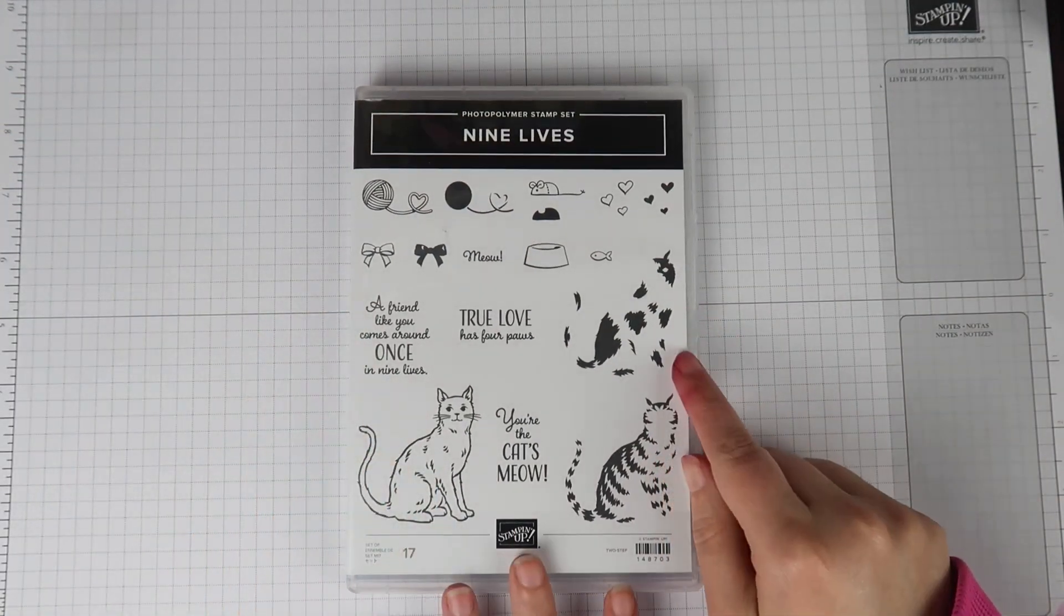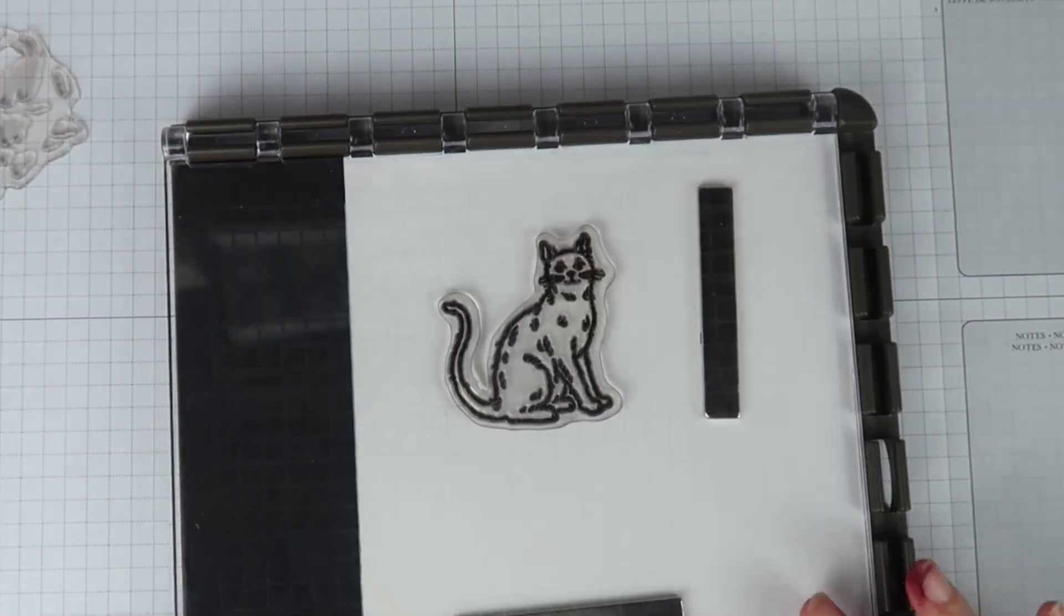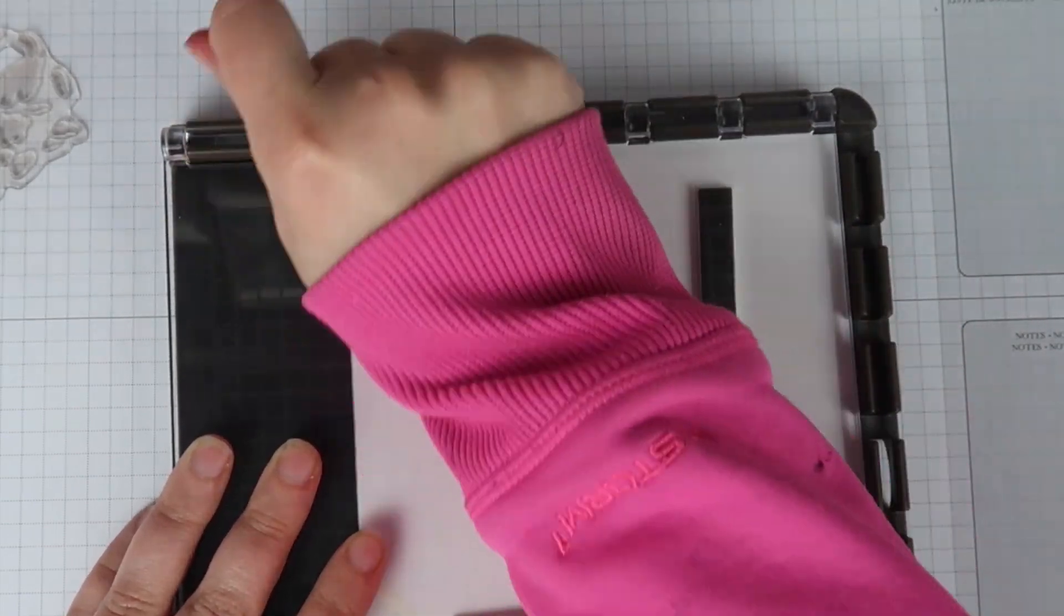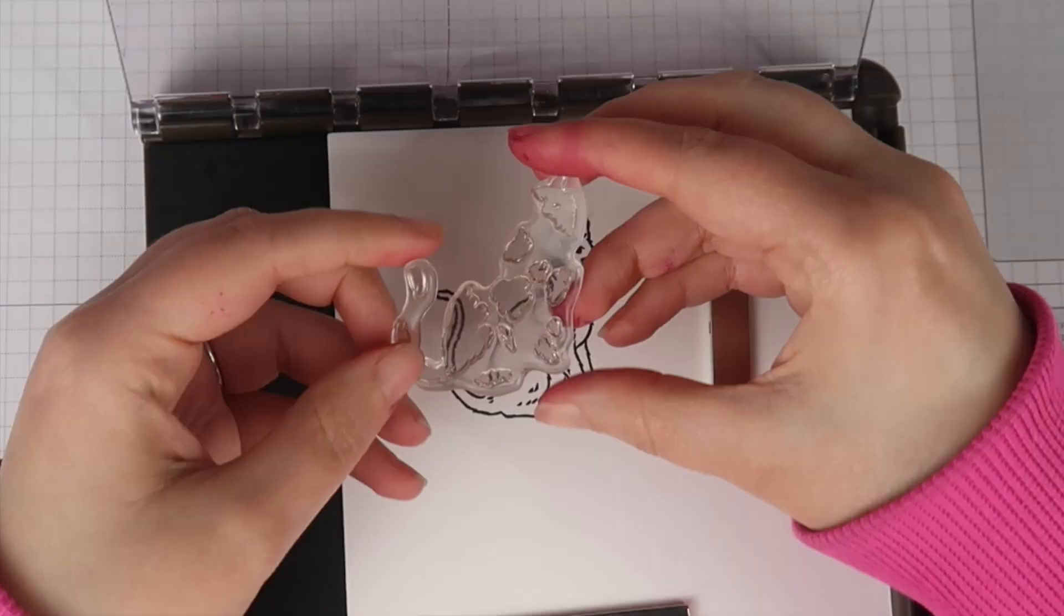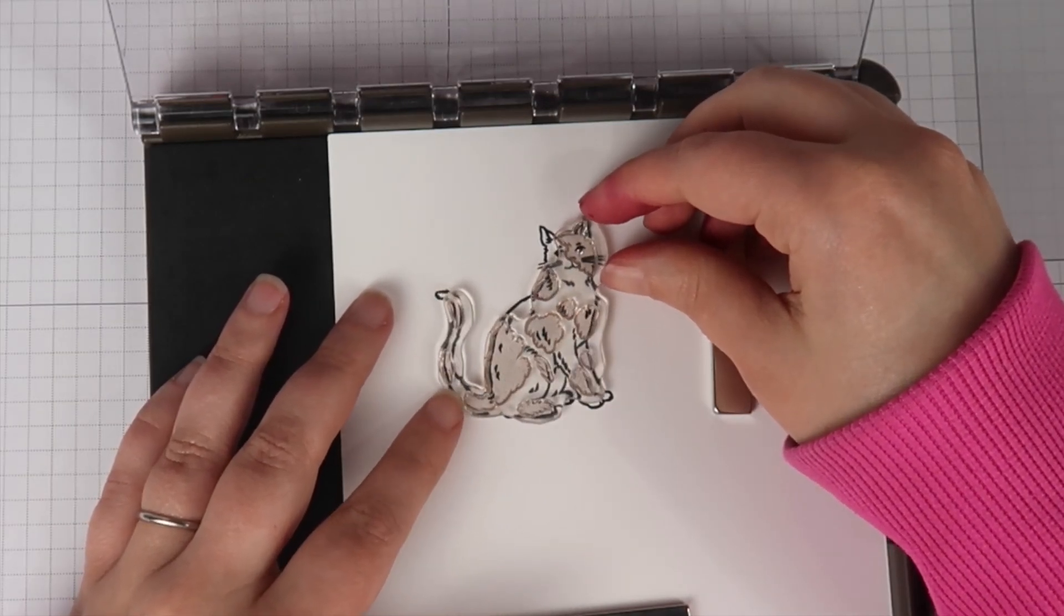So for today's card we are going to be doing some two-step stamping. I'm going to be using my stamping platform. That is my favorite way to do two-step stamps. To start with I'm just stamping the image with my Stamparatus and then I'm going to get the spots and line those up as best as I can with my cat.